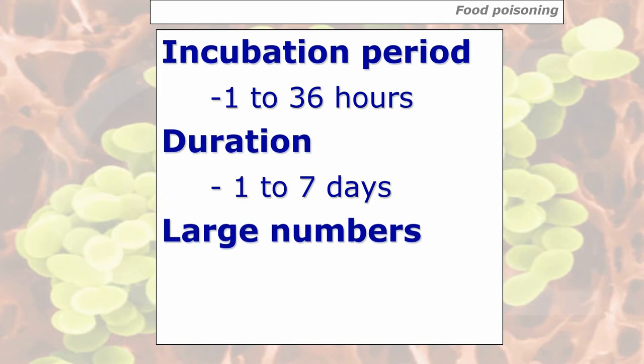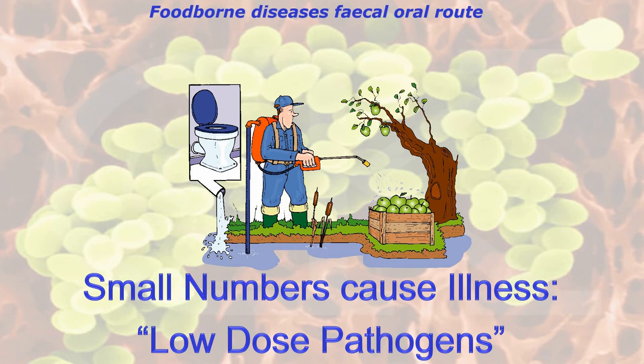Foodborne diseases enter our system by the faecal oral route, which means it's from an animal's or somebody else's waste to your mouth. The bacteria are in things like water or on food already, and these are where small numbers cause illness — they're called low dose pathogens.